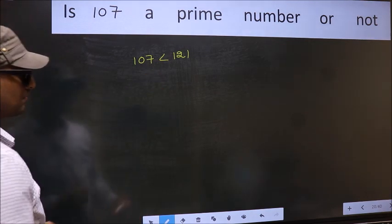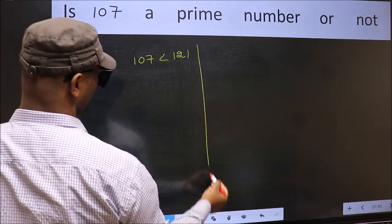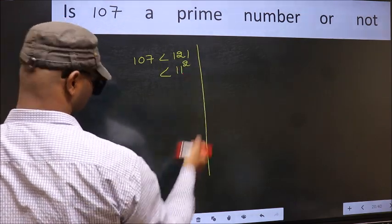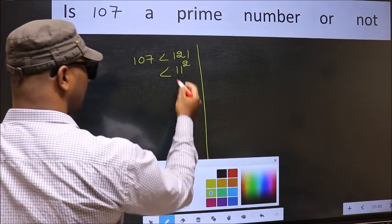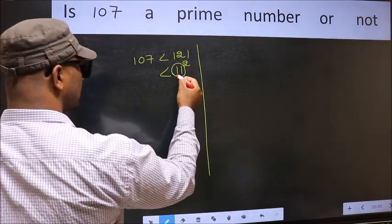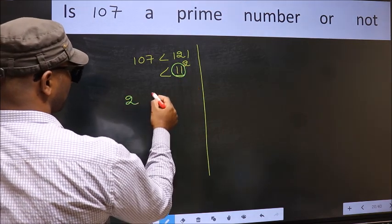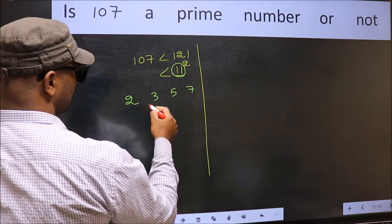Next. 121 is nothing but 11 squared. Now you write all the prime numbers less than this number 11. They are 2, 3, 5, and 7.